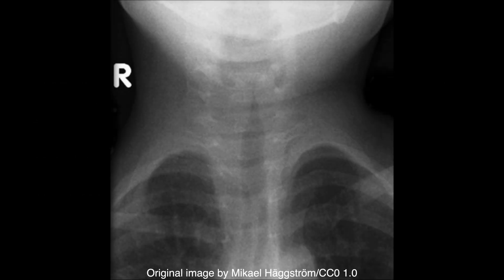Infectious croup results in subglottic narrowing, which manifests radiographically on an anteroposterior x-ray as a triangular shaped superior portion of the trachea, an appearance referred to as the steeple sign.